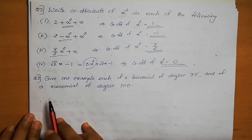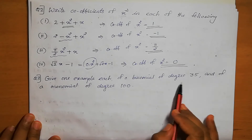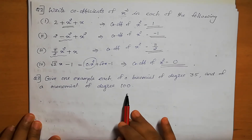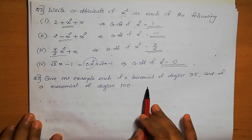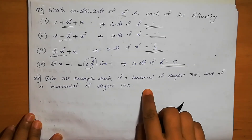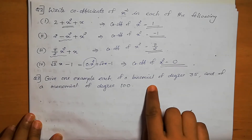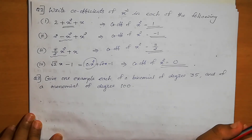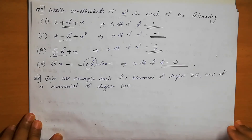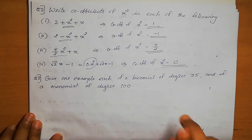Question number 3: Give one example of a binomial of degree 35 and of a monomial of degree 100. A polynomial with only one term is called a monomial, two terms is called a binomial, and three terms is called a trinomial.